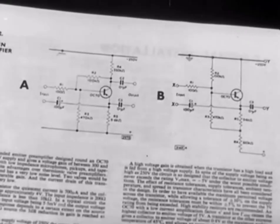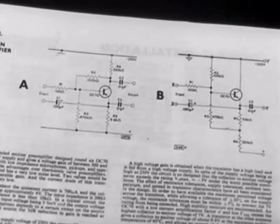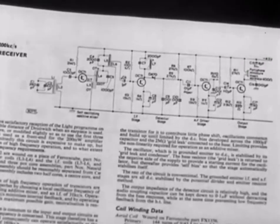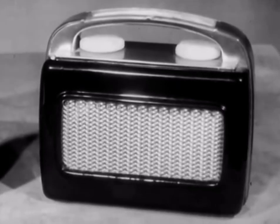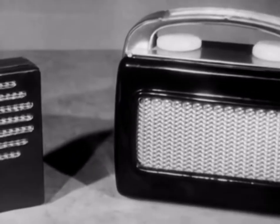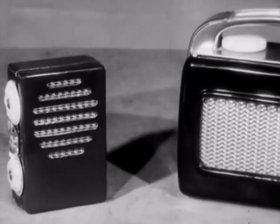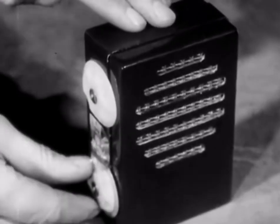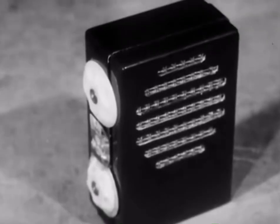The transistor can be used instead of an ordinary valve in all kinds of electronic circuits with many advantages. For example, any apparatus employing transistors can be made lighter and more compact. Not only because the transistors themselves are smaller, but because they require such a small power supply.